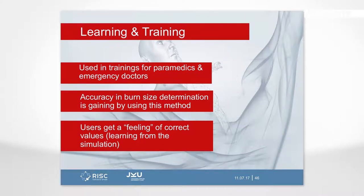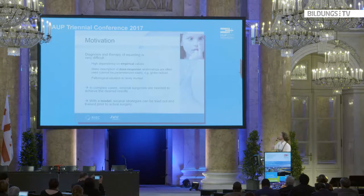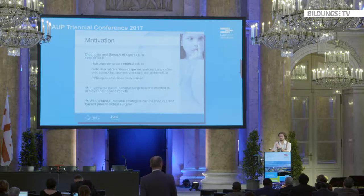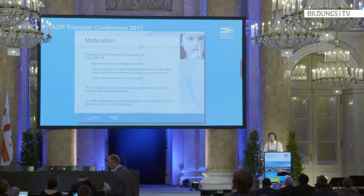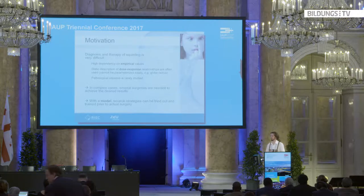Starting with problem two, which is a little shorter: strabismus surgeries are really hard to plan. The diagnosis and therapy of squinting is very difficult and highly depends on empirical values. There are static descriptions of responses mainly in books as tables, and in complex cases doctors use numbers from those books — meaning several surgeries are often necessary to achieve the desired result. Especially when treating a child, we want to provide a possibility to better plan surgeries so they can be done in one procedure.